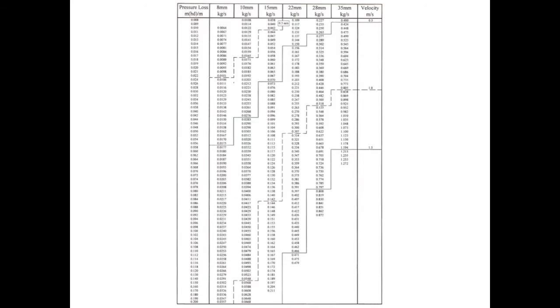Now that we have the flow rate through section 1, we can use the pressure loss chart to determine the pressure loss per meter run of pipe. In order to do that, we need to select the appropriate pipe size that meets the correct design criteria — i.e., to select the pipe size that will allow a water velocity of no more than 1 m/s for standard small bore pipework and 1.5 m/s for microbore pipework.